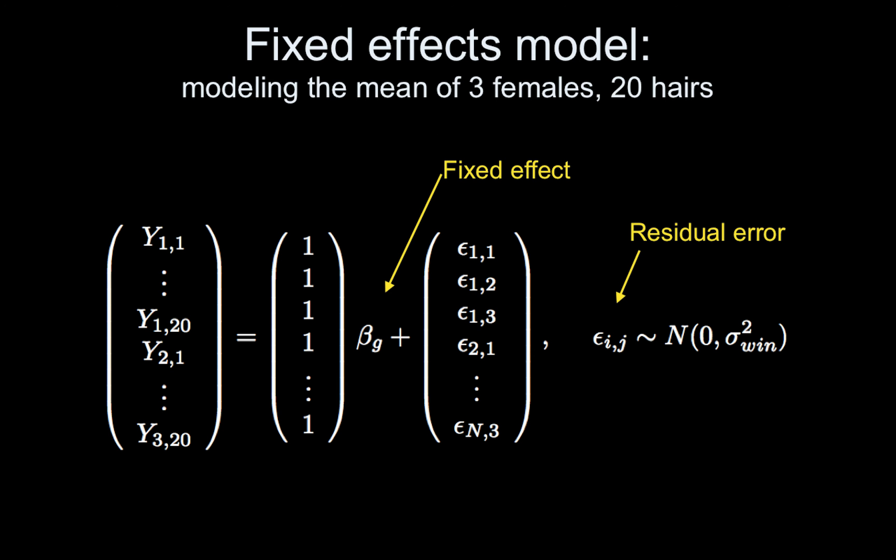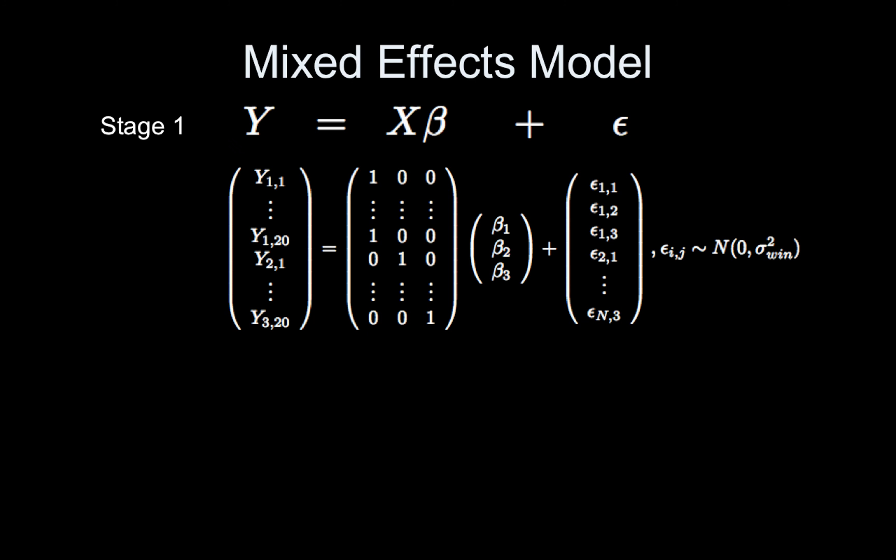A fixed effects model would look like this. So I have 60 observations here, it's the 60 hair lengths for the 20 hairs for each of my three ladies, and I have a column of ones that I'm using in my design matrix. This is a one sample t-test, so beta G is my fixed effect, it's the overall mean hair length. And I just have a single variance, which I'm calling sigma squared within for within. That's the fixed effects model.